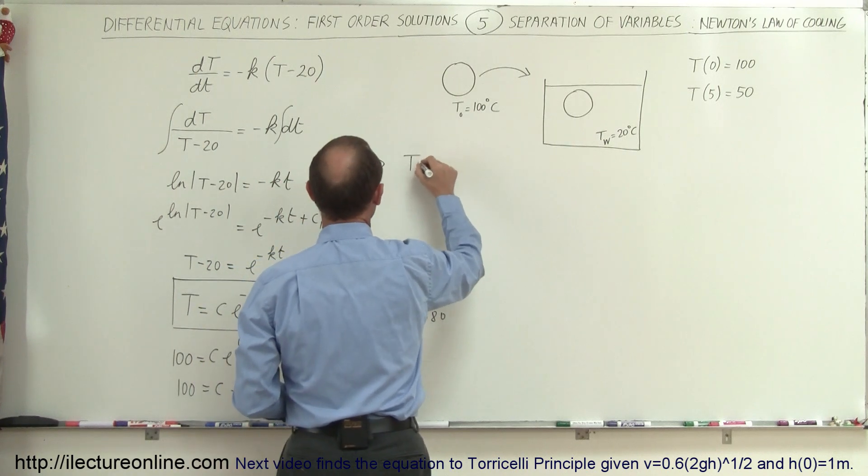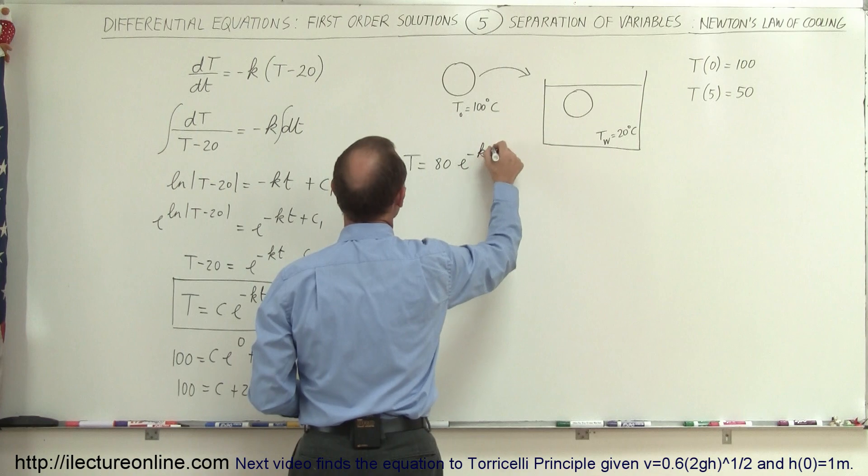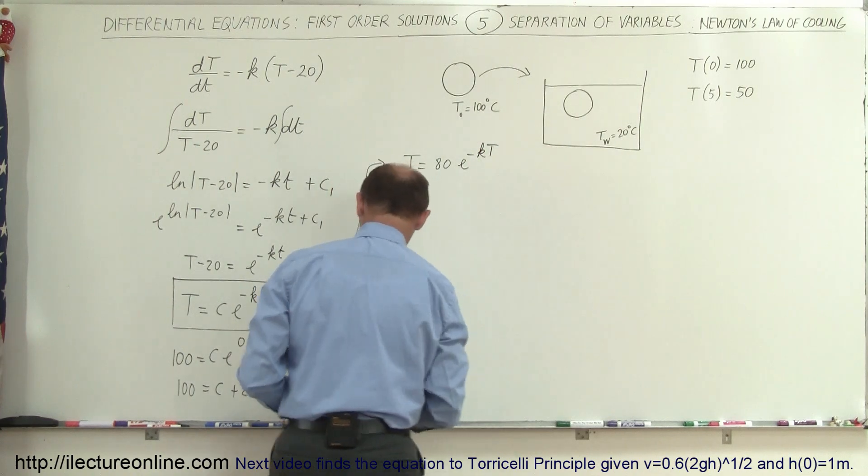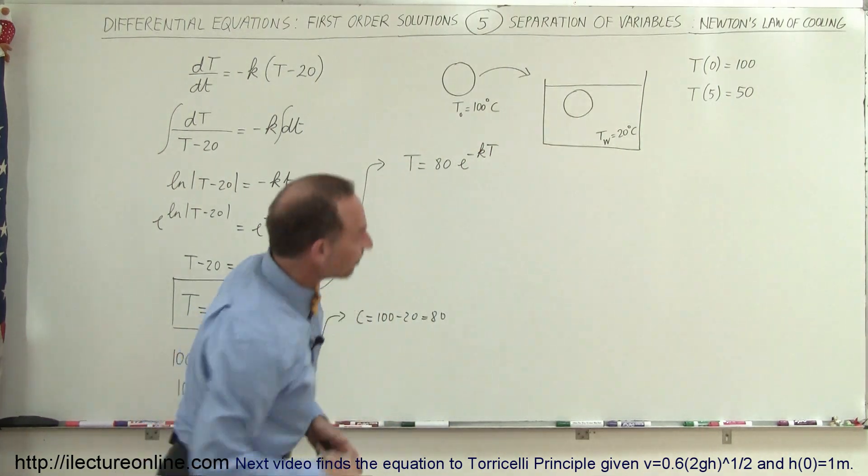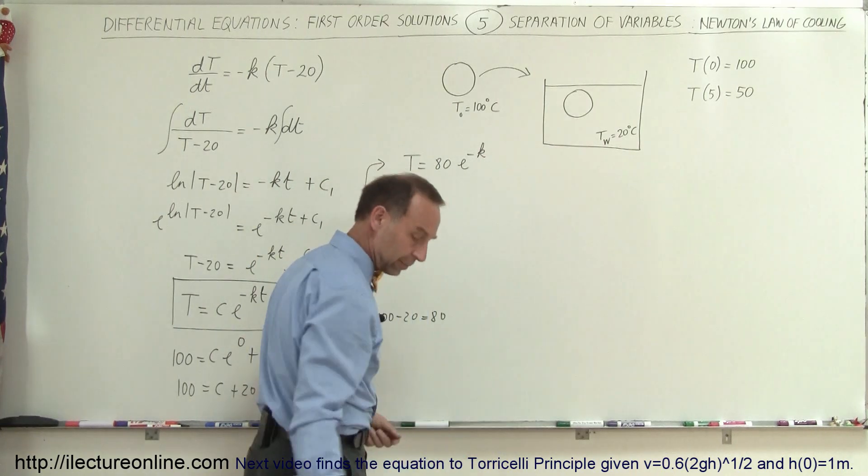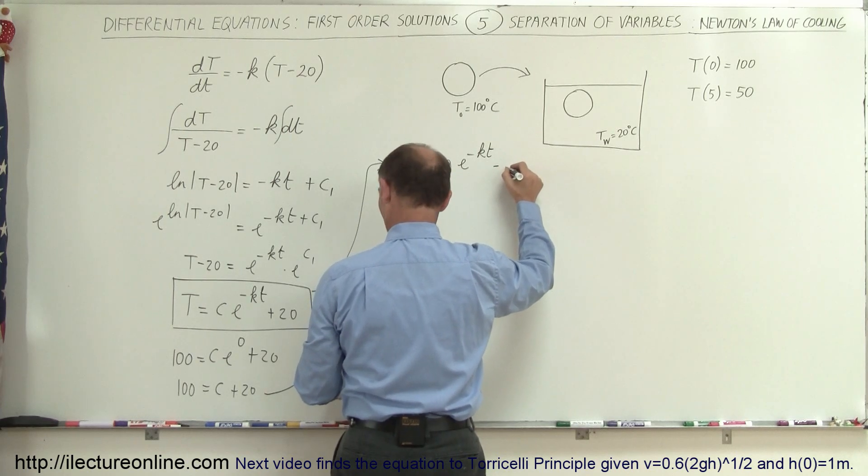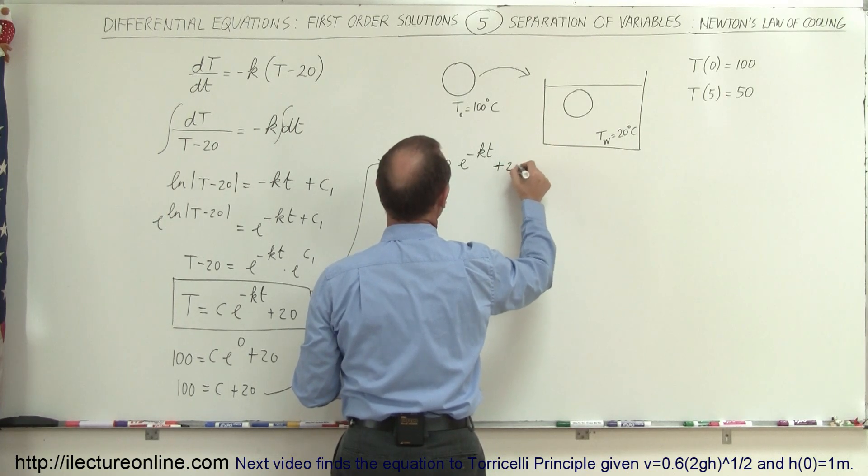When I plug that in, my equation becomes the following. Now we have T equals 80 times E to the minus Kt plus 20.